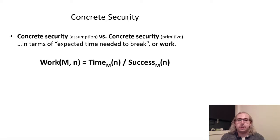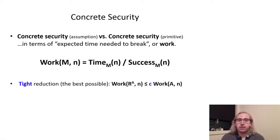We'll think of the concrete security of a primitive or assumption as the amount of work, or expected time, needed for some machine M to break it — that is, the time taken by M divided by the probability that M succeeds in the security game. The most efficient reductions, then, are those where there's only a constant factor difference between the work required by the adversary and by the reduction, since in that case, by the contrapositive, guaranteeing security of the primitive against T time adversaries requires only security against C times T time adversaries for the assumption. We'll call these tight reductions.